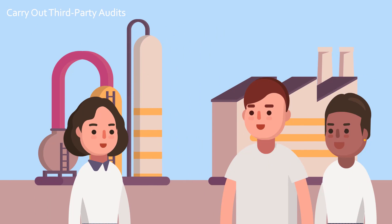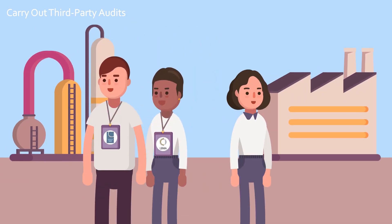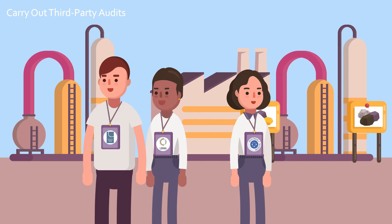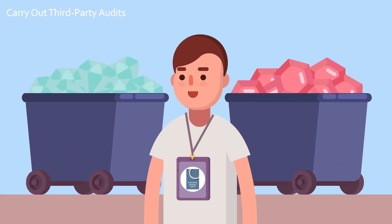RJC and LBMA offer audits of precious metals refiners. And RMI audits gold and cobalt refiners, as well as tin, tantalum, and tungsten smelters. In the case of diamonds and colored gemstones, there aren't known choke points, so companies must decide if they'll require suppliers to undergo independent third-party audits.